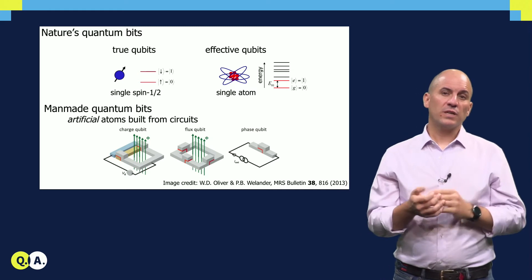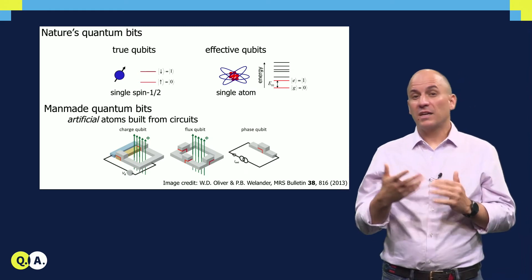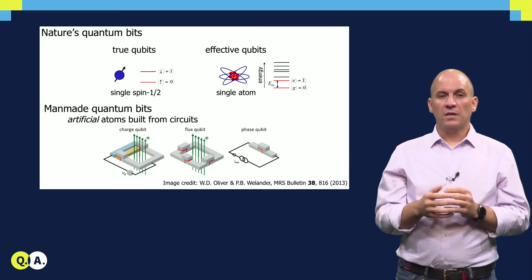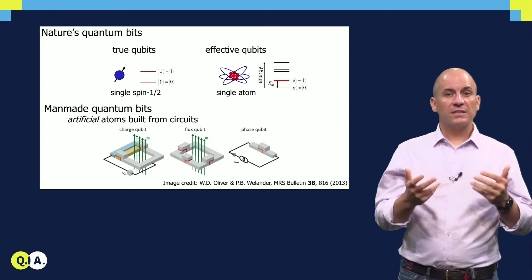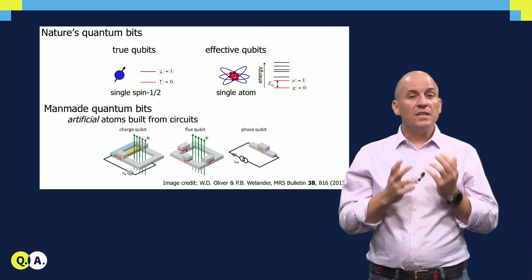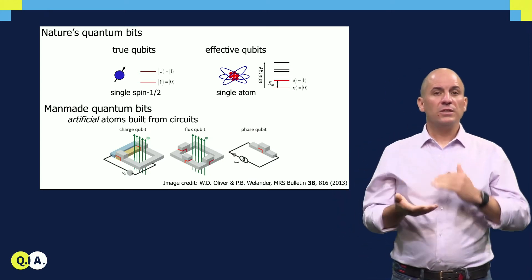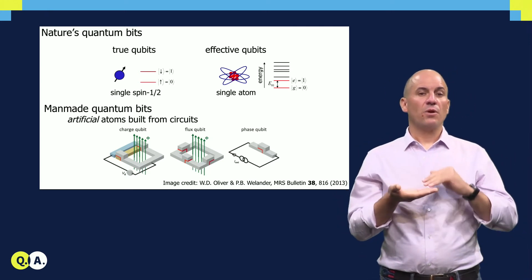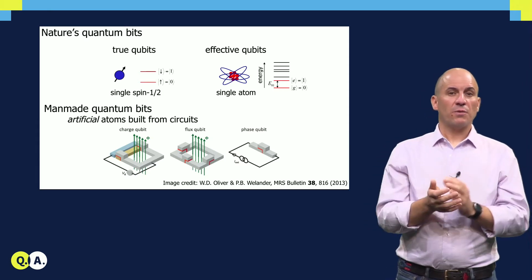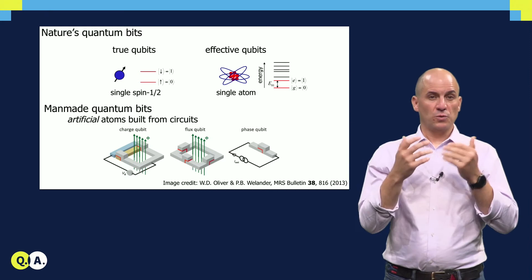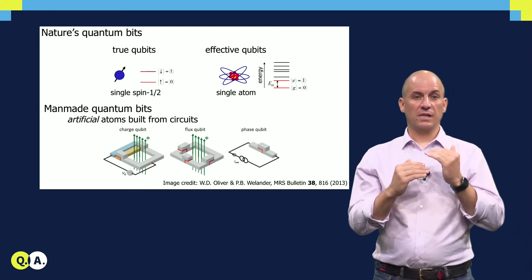Typically, superconducting qubits work in the frequency range between 4 and 8 GHz approximately. This frequency, let's call it F01, is related via Planck's constant to the energy difference E01 between the quantum levels that we assign as state 0 and 1.